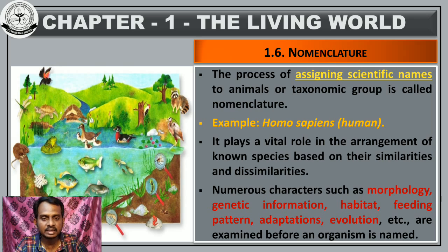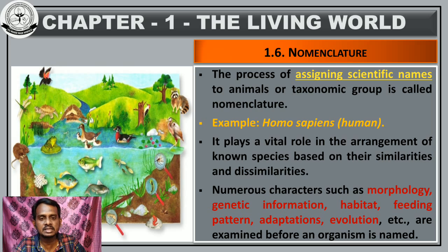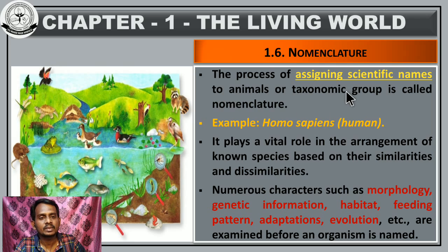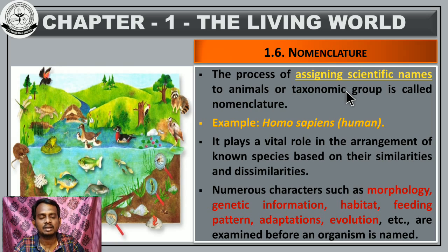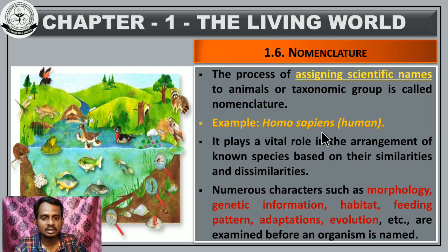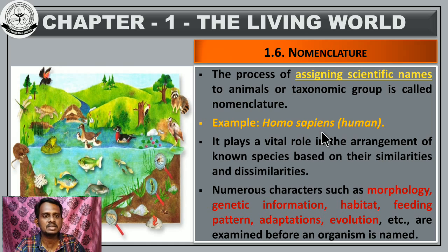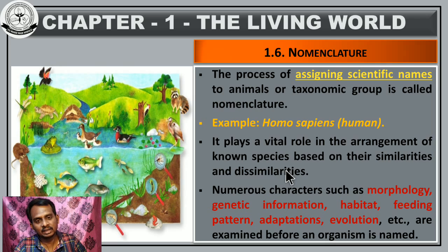For example, what is the zoological name of our national bird, the peacock? It is Pavo cristatus. This Pavo cristatus is the zoological name; peacock is the common name. And the scientific name for human being is Homo sapiens — that is the common name for human beings. Like that, scientists assign scientific names to animals or to taxonomical groups — that is called nomenclature. It may be a two-mark question.